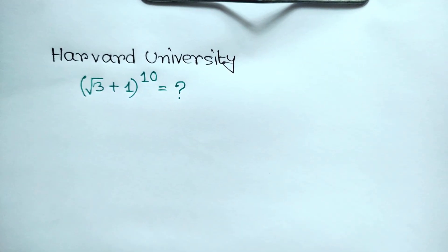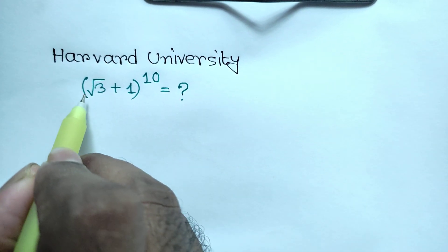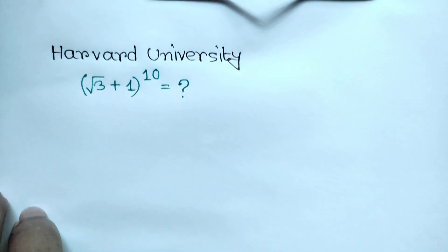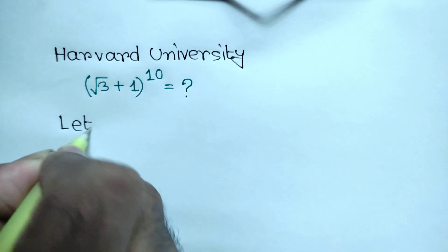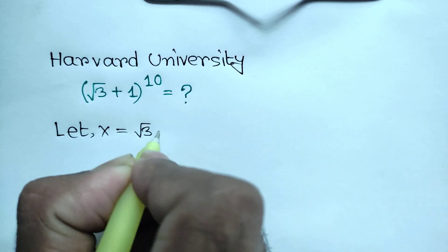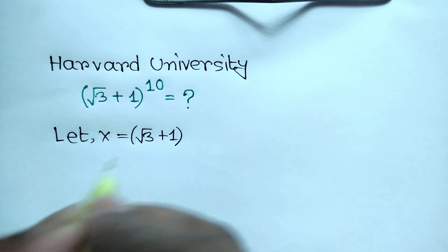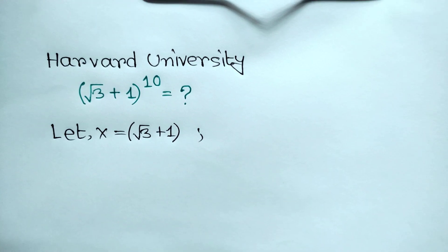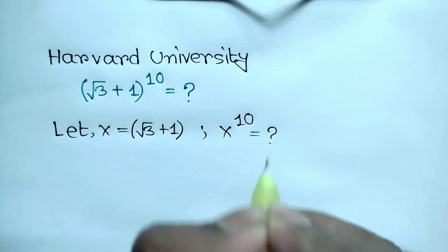Hi everyone. In this video I am going to show how to simplify this Math Olympiad problem: square root of 3 plus 1, to the power 10. Firstly, let x be equal to square root of 3 plus 1, so our target is x to the power 10.